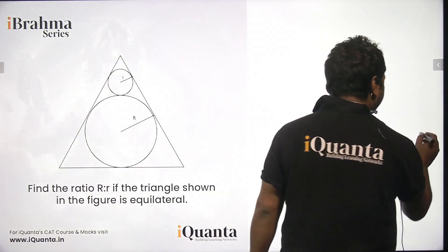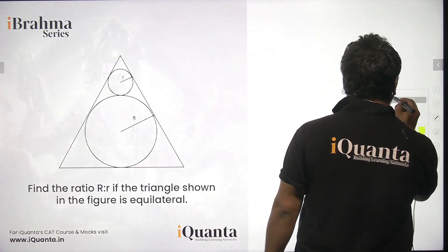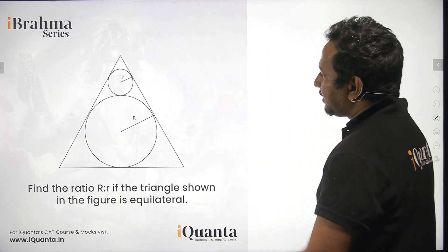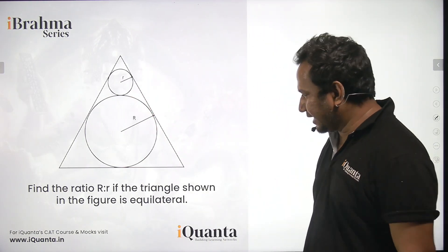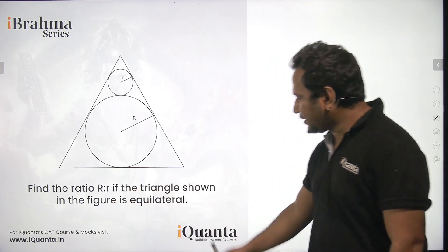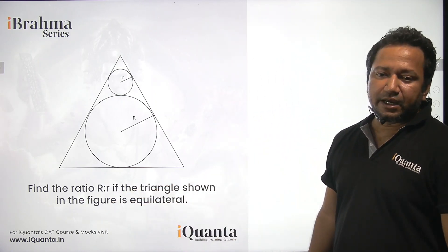Here goes the question for today. In this question we have an equilateral triangle and we have to find the ratio of these radii as given in the diagram. Find the ratio r is to R if the triangle shown in the figure is equilateral.